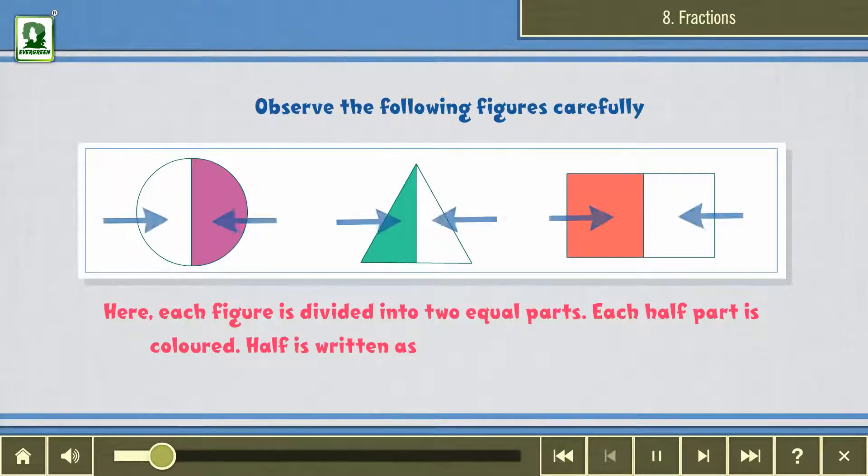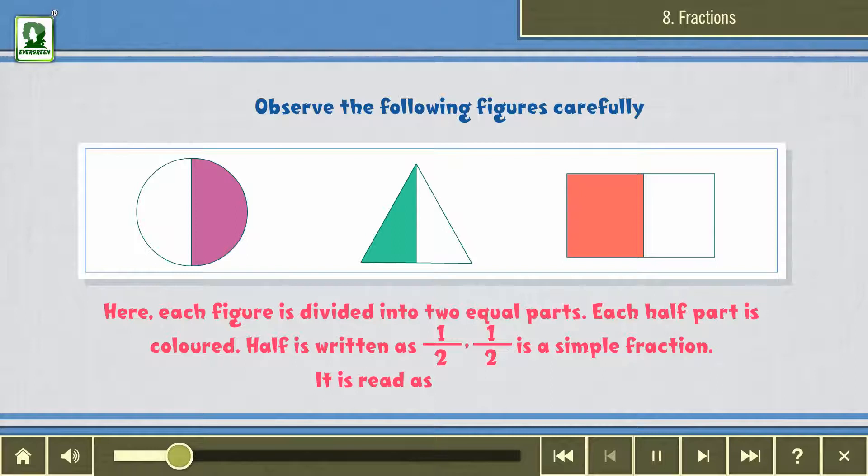Half is written as one upon two. One upon two is a simple fraction. It is read as one upon two.